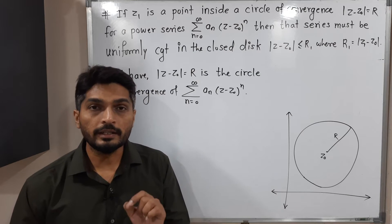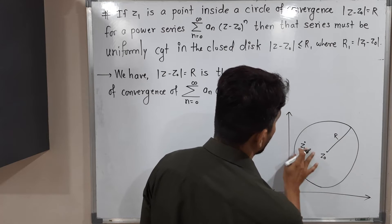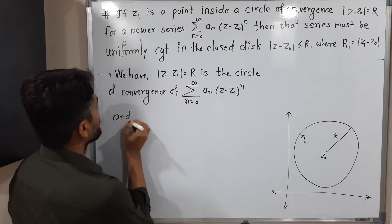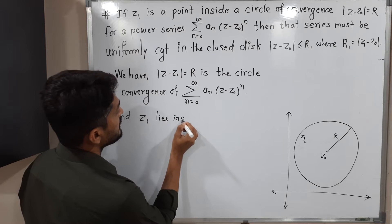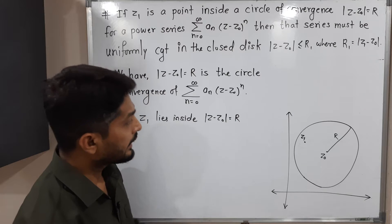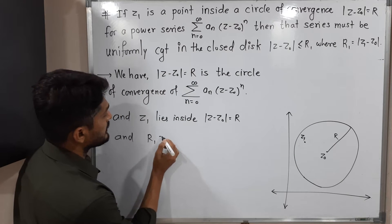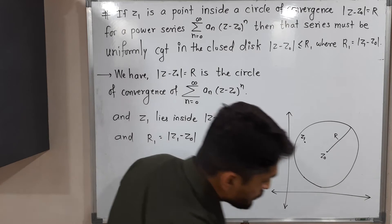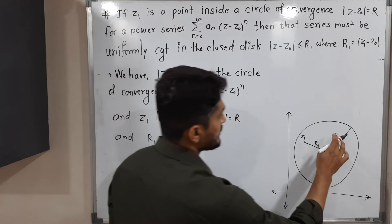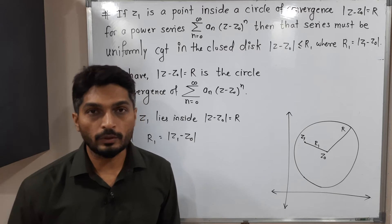The second piece of information is we are taking one point z₁ from that circle of convergence. So this is our z₁, which lies inside the circle of convergence |z - z₀| = r. The distance between z₁ and z₀ is r₁. We then consider another circle centered at z₀ with radius r₁, which is a smaller circle inside the circle of convergence.